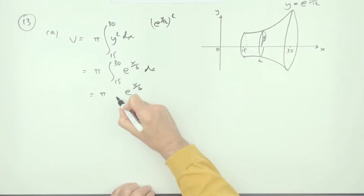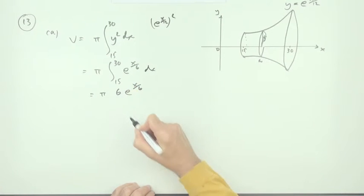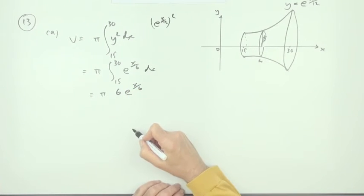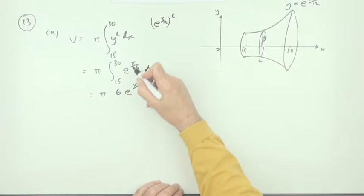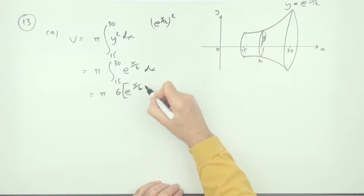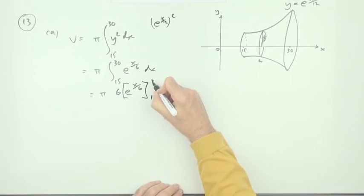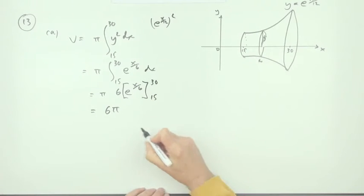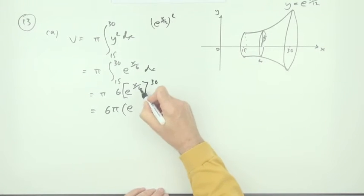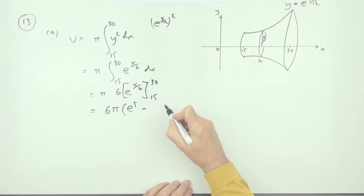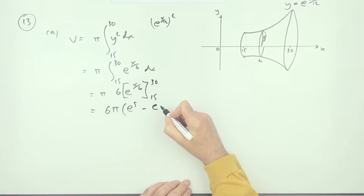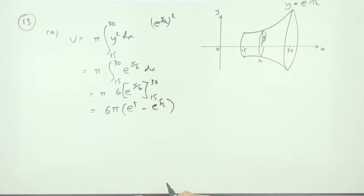Since it's a function of a function, that's a sixth of x, divide by the derivative, divide by a sixth which gives you six times it. That needs to be evaluated from 15 to 30. So I've got 6 pi times e to the 30 upon 6 which is 5, minus e to the 15 upon 6 which cancels down to 5 upon 2.